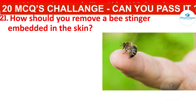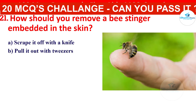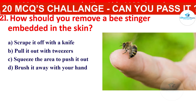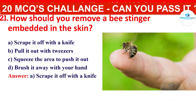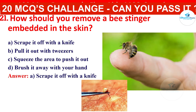How should you remove a bee stinger embedded in the skin? Your options are: scrape it off with a card, pull it out with tweezers, squeeze the area to push it out, or brush it away with your hand. The correct answer is to scrape it off. Scraping the stinger off helps to avoid squeezing more venom into the wound.